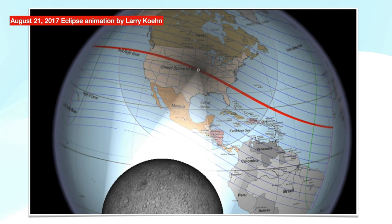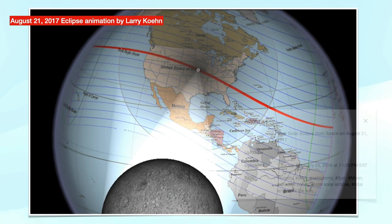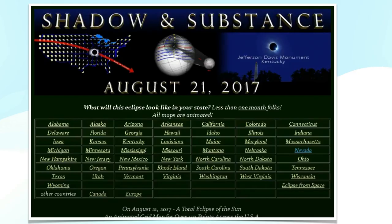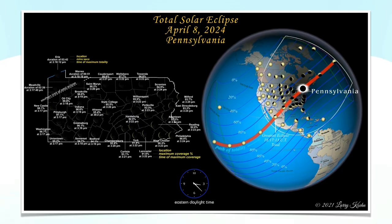One way we know the heliocentric model is correct is that it can be used to predict things like eclipses accurately years in advance. Here's a still from an animation made by Larry Cohn, which he uploaded to Vimeo fully 18 months before the 2017 eclipse. Over at Shadow and Substance, he created animations for every state in the United States that would expect an eclipse, showing visualizations for what the actual eclipse would look like on the ground.